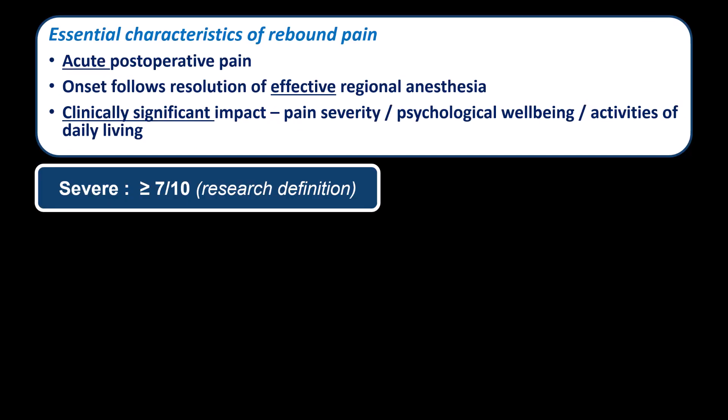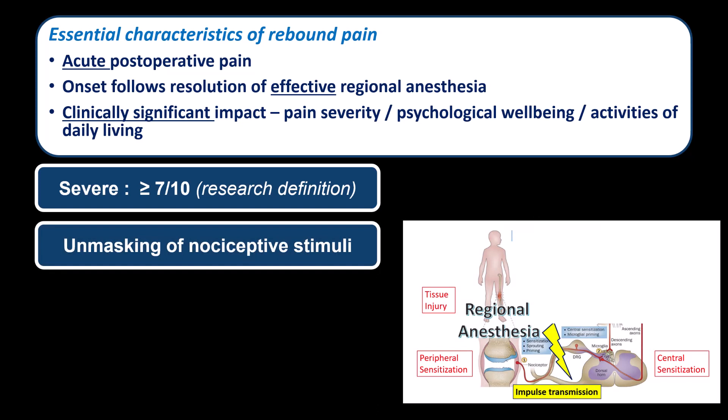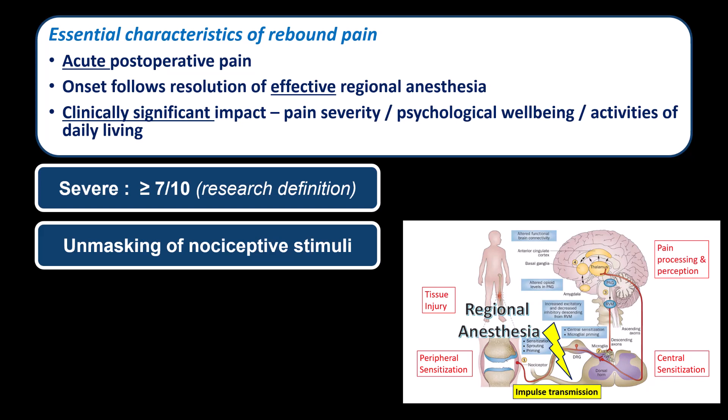There are a few things to note about this definition. First, the pain has to be severe intensity to be called rebound pain — most studies will use pain scores of 7 or greater as part of their definition. Second, rebound pain should be viewed as an unmasking of the underlying noxious stimuli — a normal and expected response to any tissue injury. These nociceptive impulses are not perceived until the conduction block of regional anesthesia wears off.